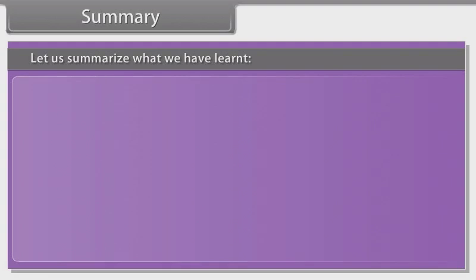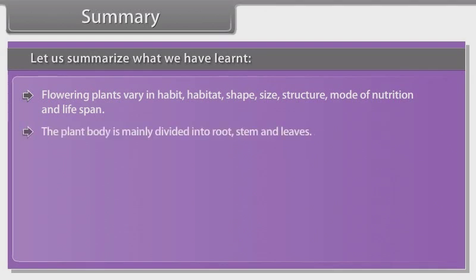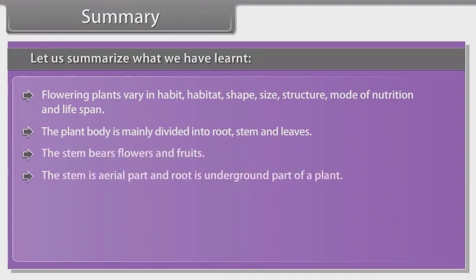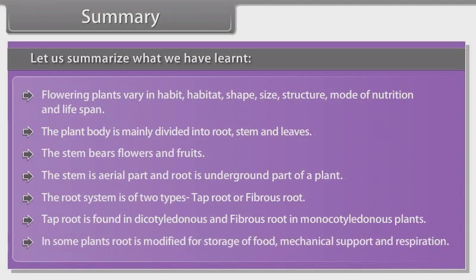Let us summarize what we have learned. Flowering plants vary in habit, habitat, shape, size, structure, mode of nutrition, and lifespan. The plant body is mainly divided into root, stem, and leaves. The stem bears flowers and fruits. The stem is the aerial part and the root is the underground part of a plant. The root system is of two types: tap root or fibrous root. Tap root is found in dicotyledonous and fibrous root in monocotyledonous plants. In some plants, roots are modified for storage of food, mechanical support, and respiration.